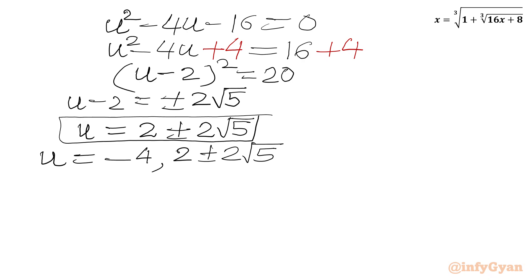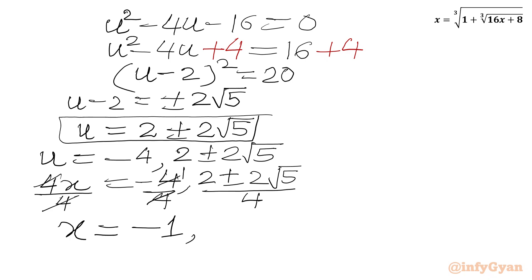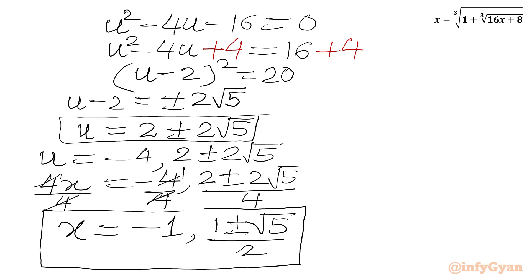Now, u was our substitution: 4x equals u. So I can write 4x equal to minus 4 and 2 plus or minus 2 square root 5. We will divide both sides by 4 to get our answers. We get x equal to negative 1, and here we write (1 plus or minus square root 5) divided by 2. So we have three real solutions: negative 1, (1 plus root 5) over 2, and (1 minus root 5) over 2.